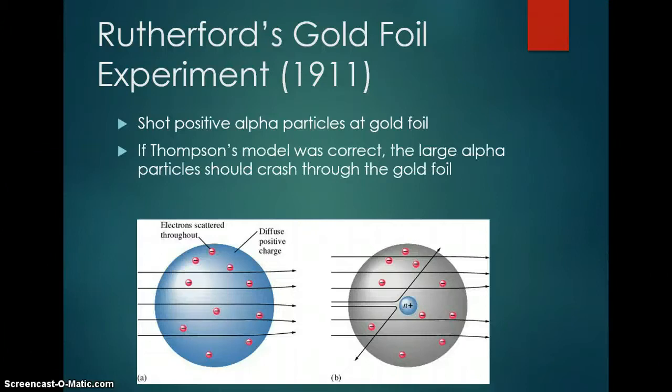If Thomson's model, his plum pudding model, was correct, the large alpha particles should crash through the gold foil. So if we're looking at this one here, which is J.J. Thomson's model, these alpha particles are considered to be so big, they're a helium nucleus, that they should just blast on through this plum pudding model.